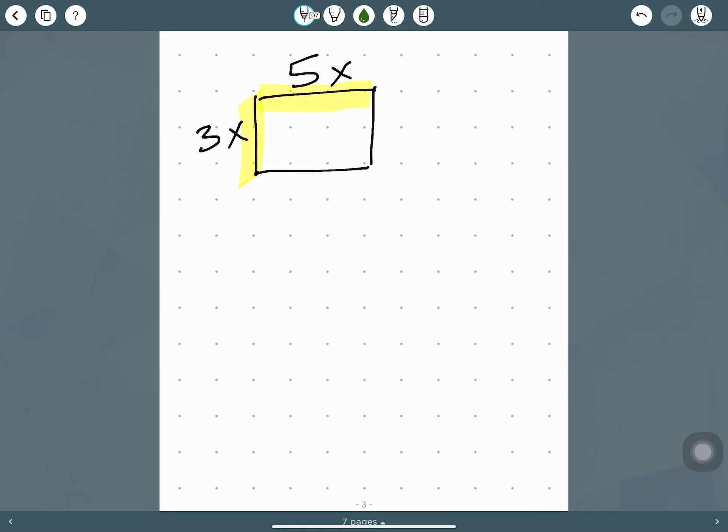All right, so just like we said before, the area of this is length times width. So it would be 3x times 5x, which is, we said 15x squared earlier. So that's 15x squared.